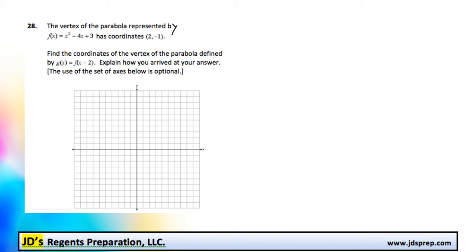This is problem number 28 from the June 2014 Algebra Regents Exam. In this question we're given a parabola, f of x equals x squared minus 4x plus 3,